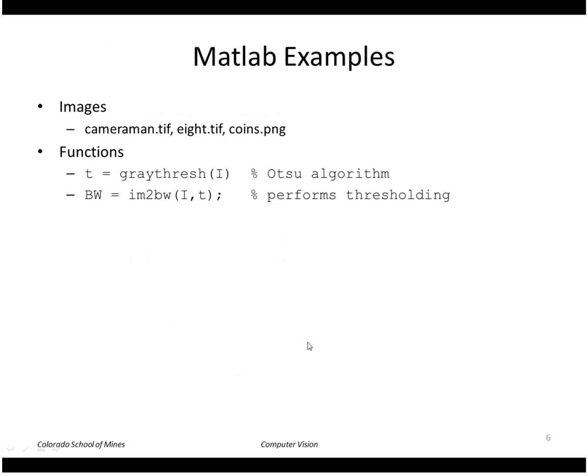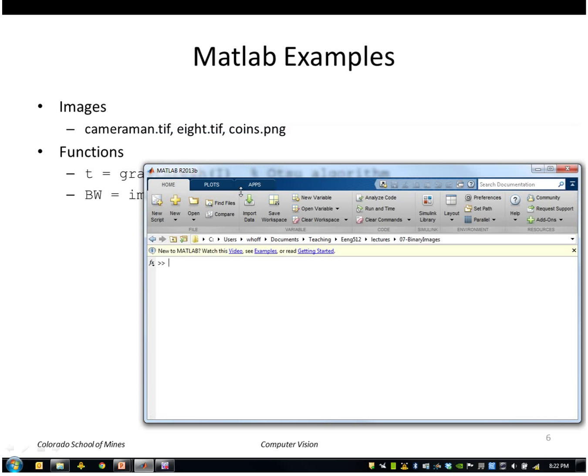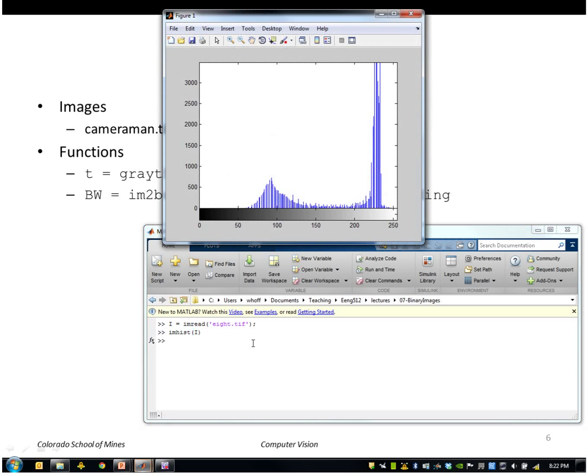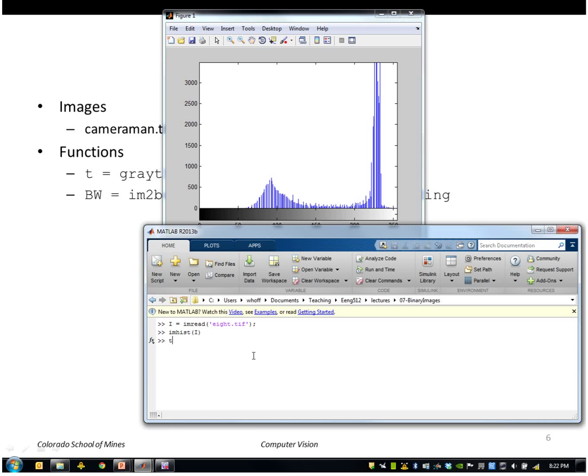So let's take an example in MATLAB. In MATLAB we have the function graythresh. So let me read in the image 8.tif, which is what we are looking at. So this is the histogram of that image as we saw before. We will compute the histogram by using graythresh.